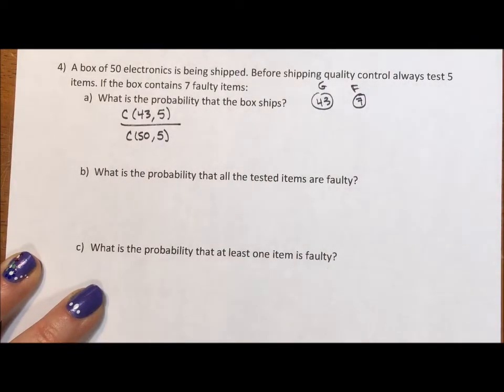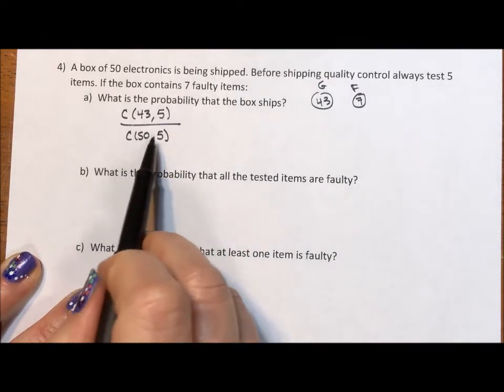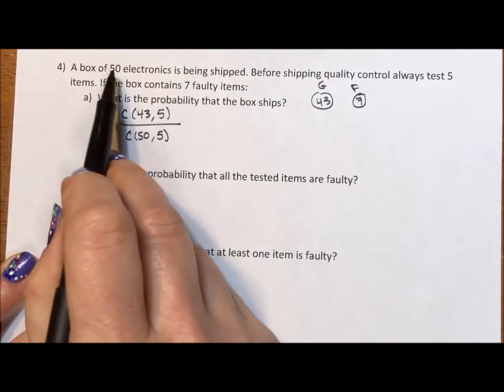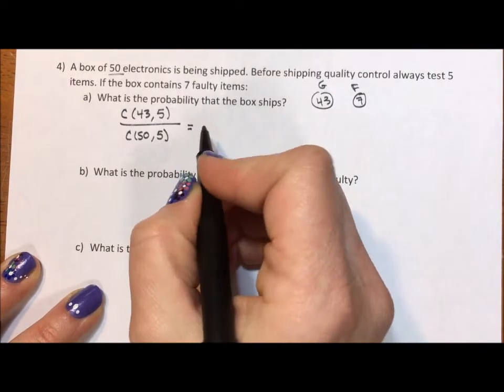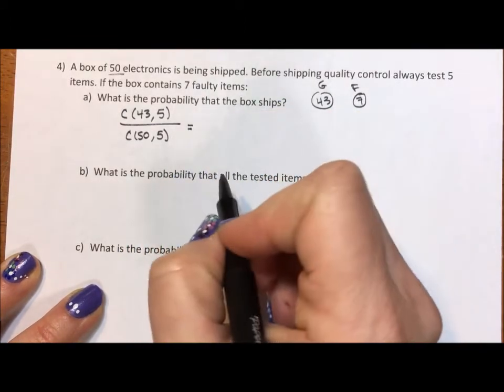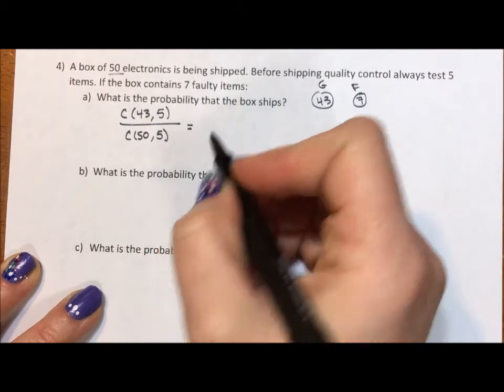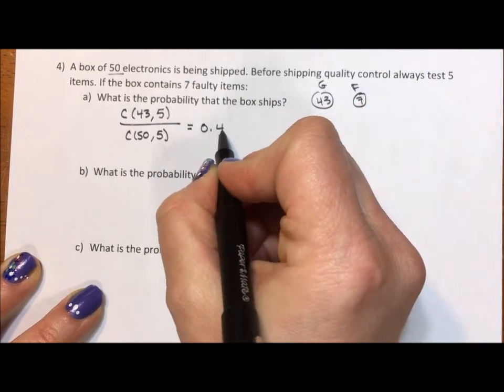When we do probability, we're looking at part over whole. And so whole should always be everything put together, all 50 electronics. When we throw this into a calculator, we find out that the probability of the box still shipping is 0.454.